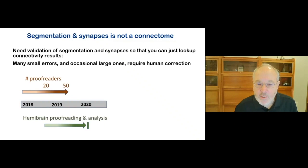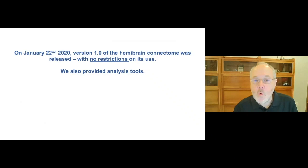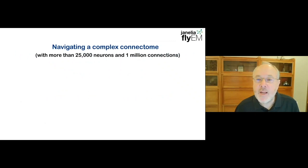Remember those 200 person years of proofreading we estimated for the full brain? That would correspond to 100 person years for the hemibrain, which is about what it took. A team of 50 proofreaders worked on this project for the better part of two years under the direction of Ruchi and Pat. And you will soon hear from Ruchi what it takes to recruit, train, and manage a team of that size.